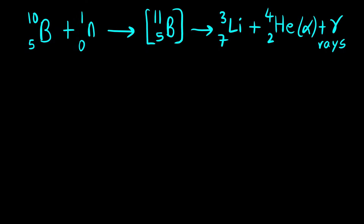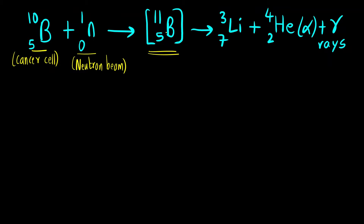This is the nuclear reaction involved in Boron Neutron Capture Theory. The first step is this boron isotope — B-10 — is absorbed by the cancer cell. Then we bombard that with a neutron beam, and an intermediate species is formed which is unstable — this is the isotope of boron with atomic mass 11. This undergoes decay to form a lithium atom and an alpha particle.